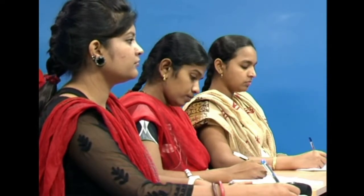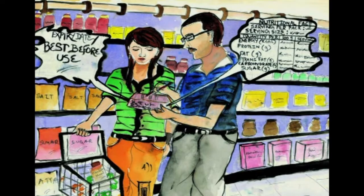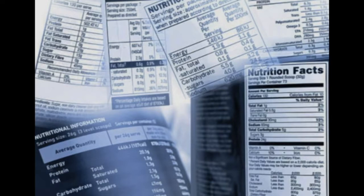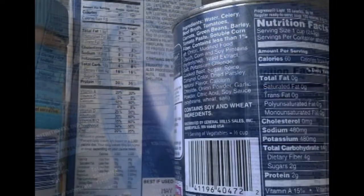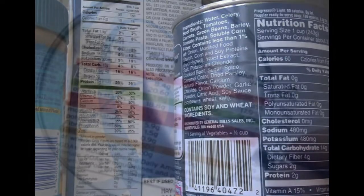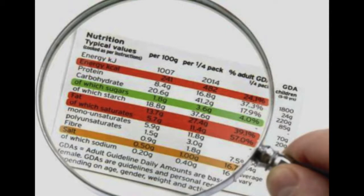No person should manufacture, distribute, sell, or expose for sale any packaged food products that are not marked or labeled in the manner specified by the act. The Food Safety and Standards Regulation 2012 says every food business operator shall ensure that labeling and presentation of food, including shape, appearance, packaging, and the setting in which they are displayed, complies with regulations. No advertisement of any food should be misleading or deceiving or contravene the provisions of this act.